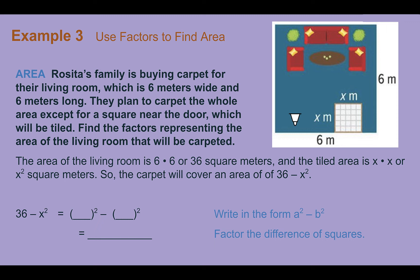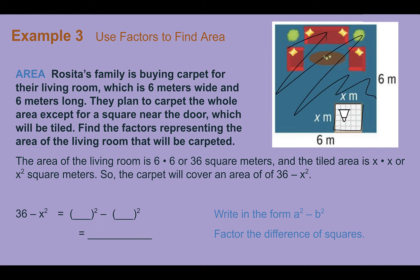Example 3: Use factors to find area. Rosita's family is buying carpet for their living room, which is 6 meters wide and 6 meters long. They plan to carpet the whole area except for a square near the door, which will be tiled. Find the factors representing the area of the living room that will be carpeted. The whole area would be 6 by 6, or 36. The area of the tile is x times x, so x squared. The carpeted area is 36 minus x squared — a difference of squares: 6 squared minus x squared. The factored form is 6 plus x and 6 minus x.